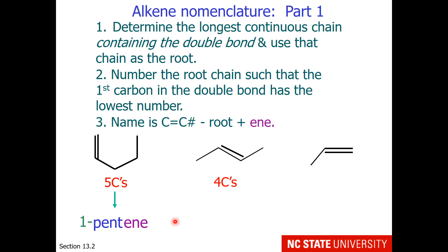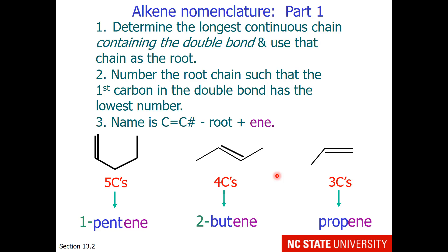The next one has 4 carbons, so it has an '-ene' ending and 'but-' as the root — as a first pass we call this 2-butene, though there's a bit more to the name. If we have 3 carbons, we simply call it propene. We don't need to say 1-propene because if the double bond started on the second carbon, that would actually be the same molecule — there is no 2-propene, only propene.